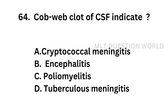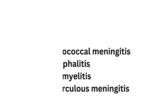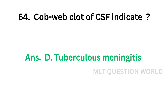Question number 64: Cobweb clot of CSF indicates — Option A: Cryptococcal meningitis, Option B: Encephalitis, Option C: Poliomyelitis, Option D: Tuberculous meningitis. The correct answer is Option D, Tuberculous meningitis. Cobweb clot of CSF indicates tuberculous meningitis.